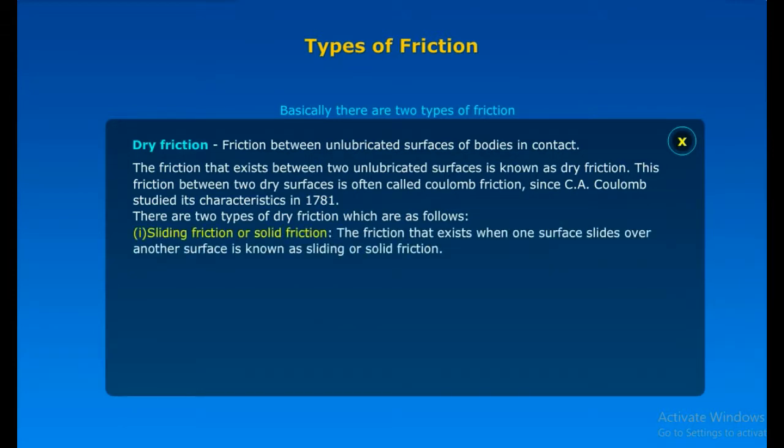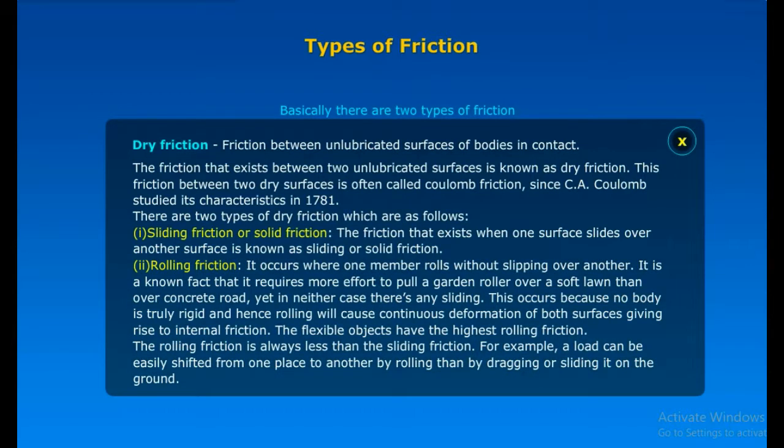1. Sliding friction or solid friction. The friction that exists when one surface slides over another surface is known as sliding or solid friction. 2. Rolling friction. It occurs where one member rolls without slipping over another. It is a known fact that it requires more effort to pull a garden roller over a soft lawn than over concrete road. Yet, in neither case there is any sliding. This occurs because no body is truly rigid and hence rolling will cause continuous deformation of both surfaces giving rise to internal friction. The flexible objects have the highest rolling friction. The rolling friction is always less than the sliding friction. For example, a load can be easily shifted from one place to another by rolling than by dragging or sliding it on the ground.